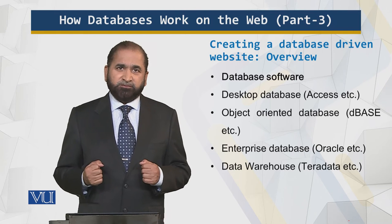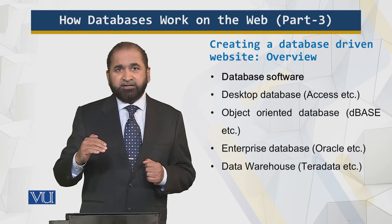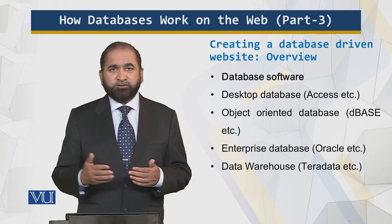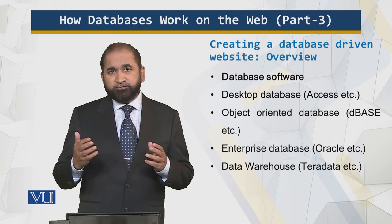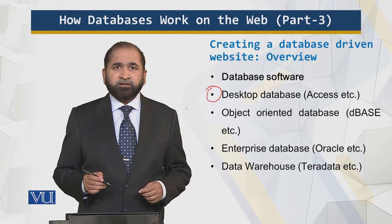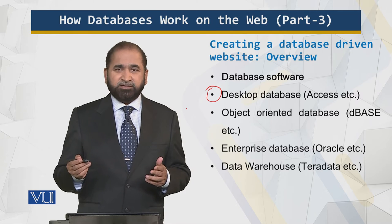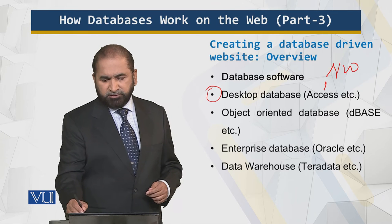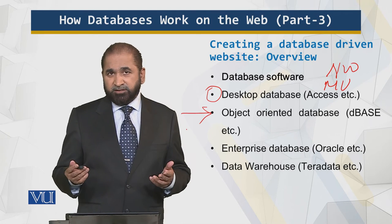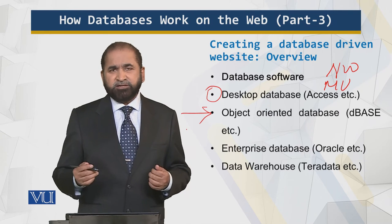There are different database software tiers. We have the basic database software, then the middle tier, then the higher end, and then something called decision support systems, which is not part of this course but was part of CS 614. Starting with basic desktop databases like Access — over time these have become networked and multi-user. Then we have object-oriented databases where you can implement the object-oriented paradigm in the context of databases, such as DBase and others, where you can do programming for this purpose.